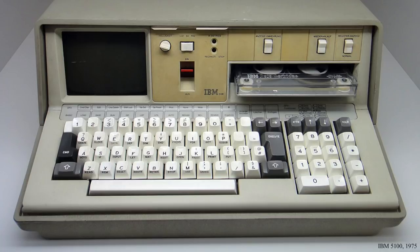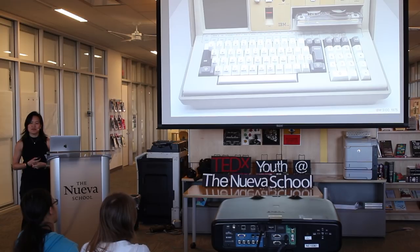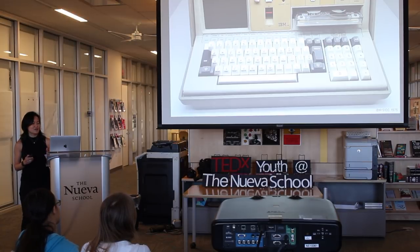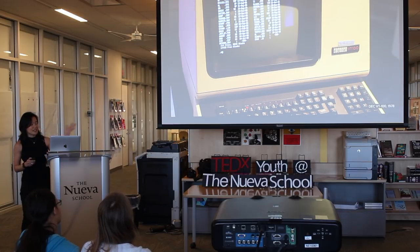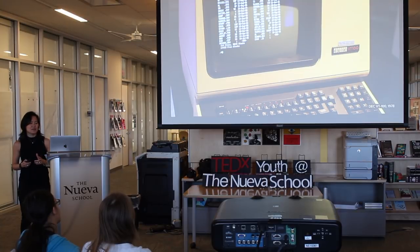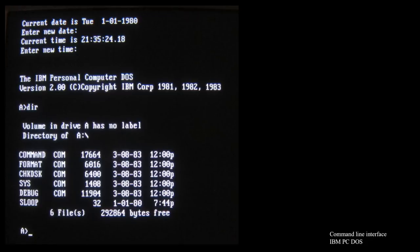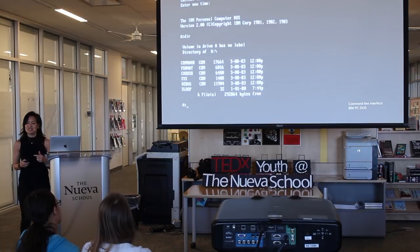These inventions drove the birth of the personal computer. The first personal computer was introduced in 1975 by IBM, and it featured a 16-line by 64-character display that ran a computer language called BASIC. Command line interfaces were the primary means of interacting with computers — first on terminals like the DEC VT100, and later on personal computers running UNIX or MS-DOS. The interface consisted of a command line shell which accepted commands as text input and converted them into corresponding operating system functions.